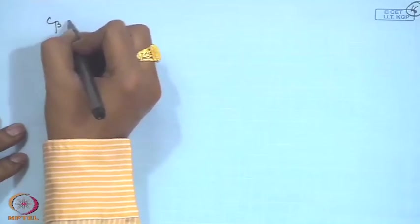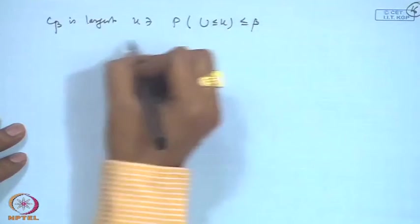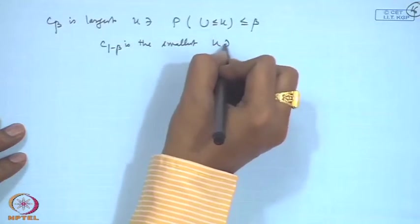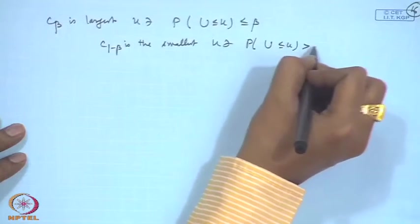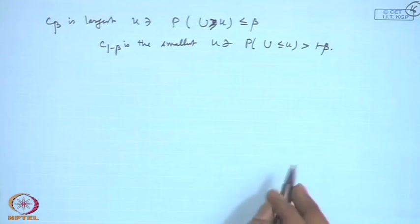Here C_β is the largest u such that P(U ≤ u) ≤ β, and C_{1−β} is the smallest u such that P(U ≤ u) ≥ 1−β. In the next lecture we will discuss the null distribution of U, how it is obtained, and the mean and variance under the general hypothesis. We will also define the Wilcoxon statistic for the two-sample problem, the general rank statistic for the two-sample problem, and look at the asymptotic distributions.